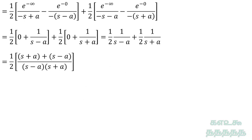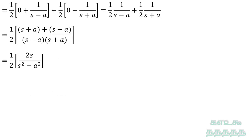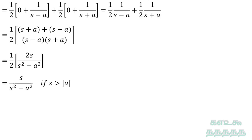Adding 1 by (s minus a) and 1 by (s plus a), and simplifying the equation. Finally we get s by (s squared minus a squared).